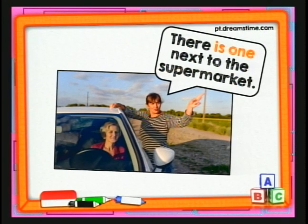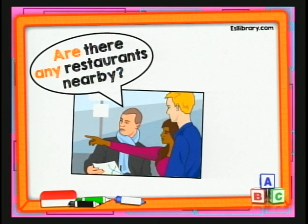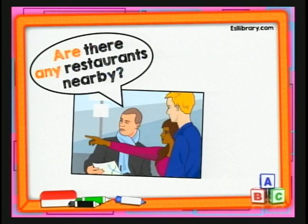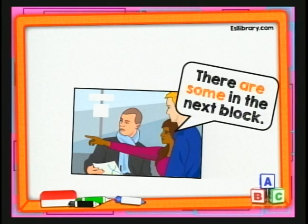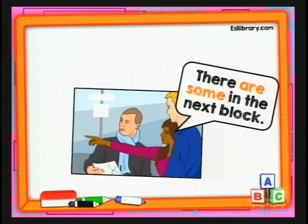Vamos a ver un último ejemplo antes de entrar al tema del día de hoy. Volvemos a una pregunta en plural: 'Are there any restaurants nearby?' La palabra importante aquí es 'nearby,' que quiere decir por aquí, cerca de aquí. Are there any restaurants nearby? Yes, there are some in the next block. 'There are some' quiere decir hay unos — unos restaurantes, obviamente — en la siguiente cuadra. Eso fue un poco de lo que habíamos tratado la clase anterior: cómo se pregunta si hay un banco, una panadería, una tienda, etcétera, con el verbo to be y la preposición there — is there o are there.